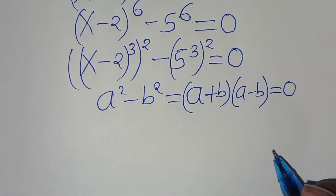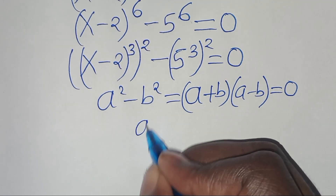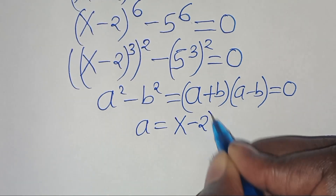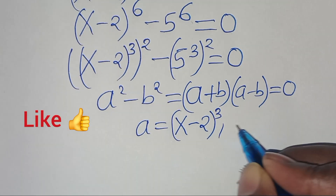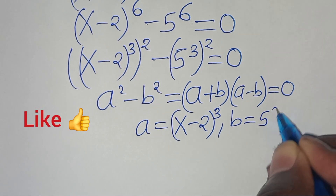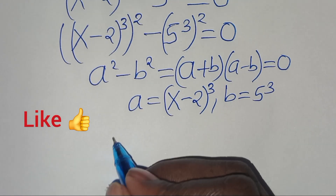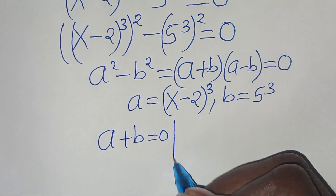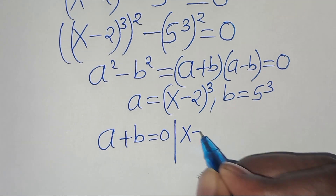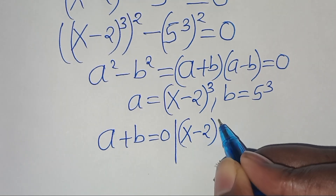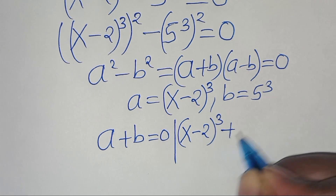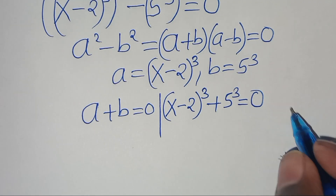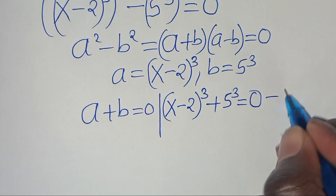Here, a is equal to (x minus 2)^3 and b is equal to 5^3. Setting a plus b equal to 0 gives us (x minus 2)^3 plus 5^3 equal to 0. Let's call this equation 1.